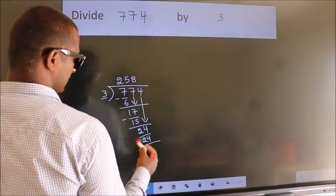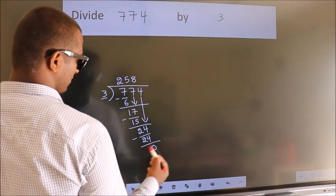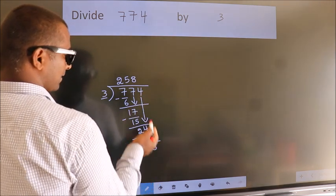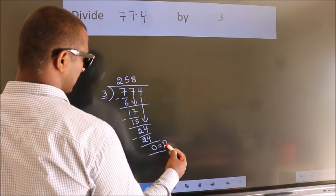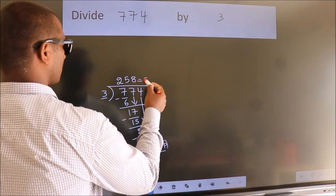Now, we subtract. We get 0. No more numbers to bring it down. So, we stop here. This is our remainder. This is our quotient.